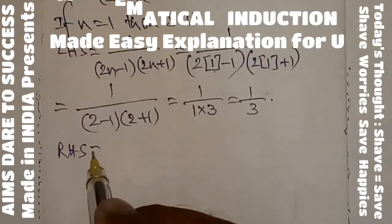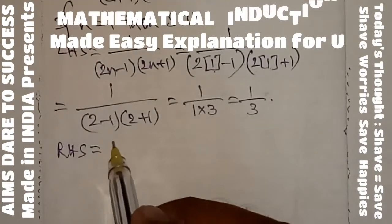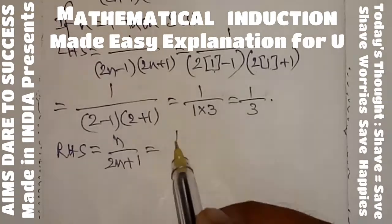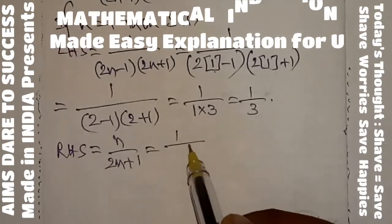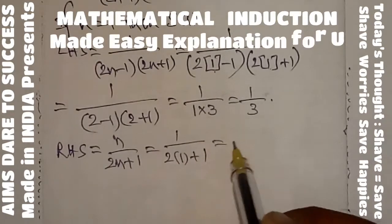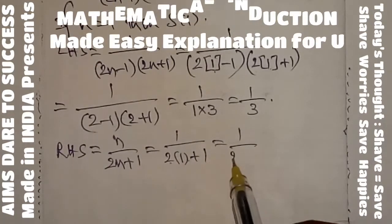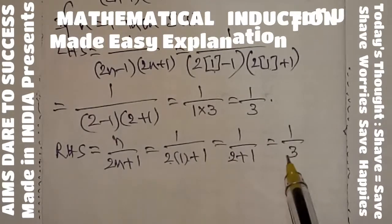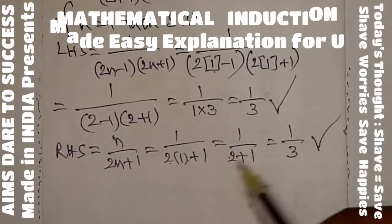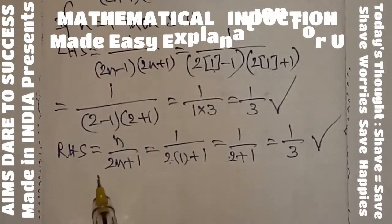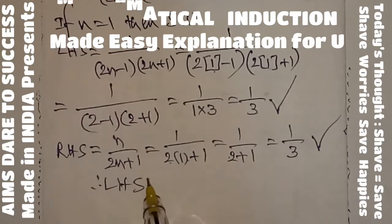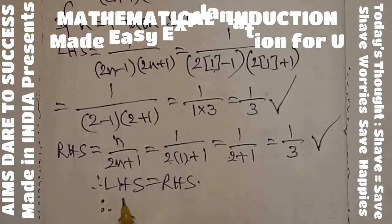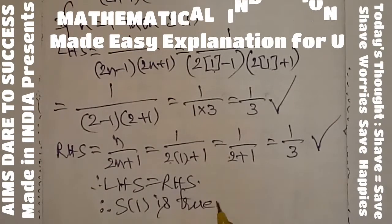Next I wanted to write RHS. RHS value is n/(2n+1). Here also substitute n = 1. We get 1/(2×1+1) = 1/(2+1) = 1/3. Here LHS value is 1/3, RHS value is also 1/3. Therefore LHS = RHS. Therefore S(1) is true.